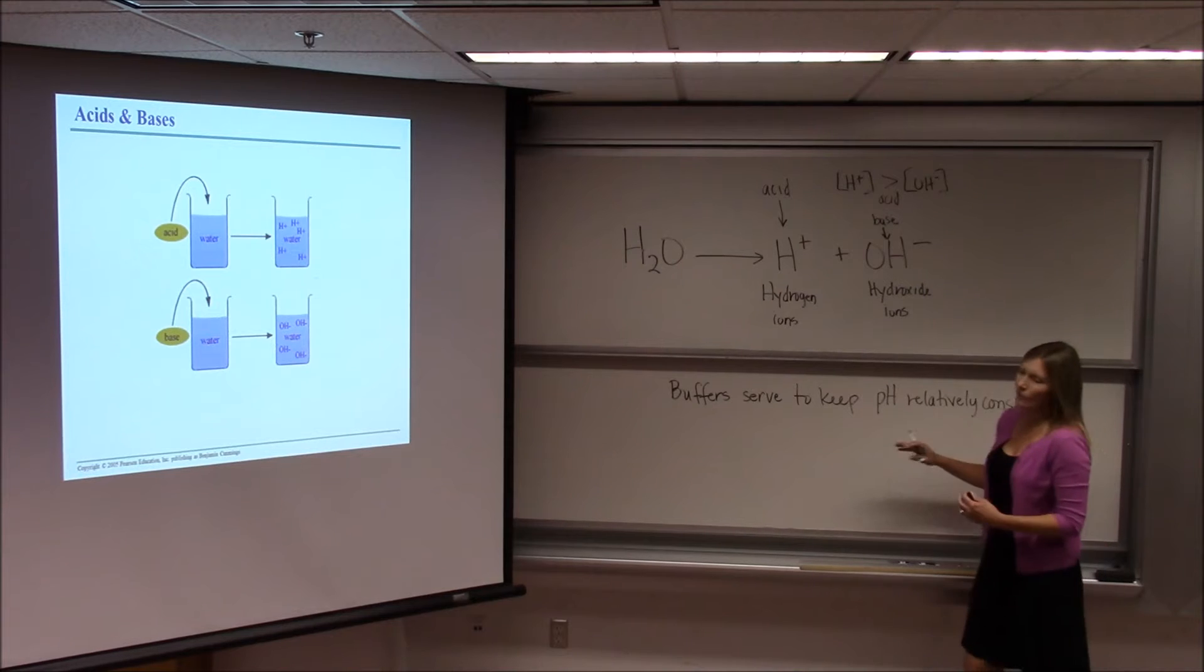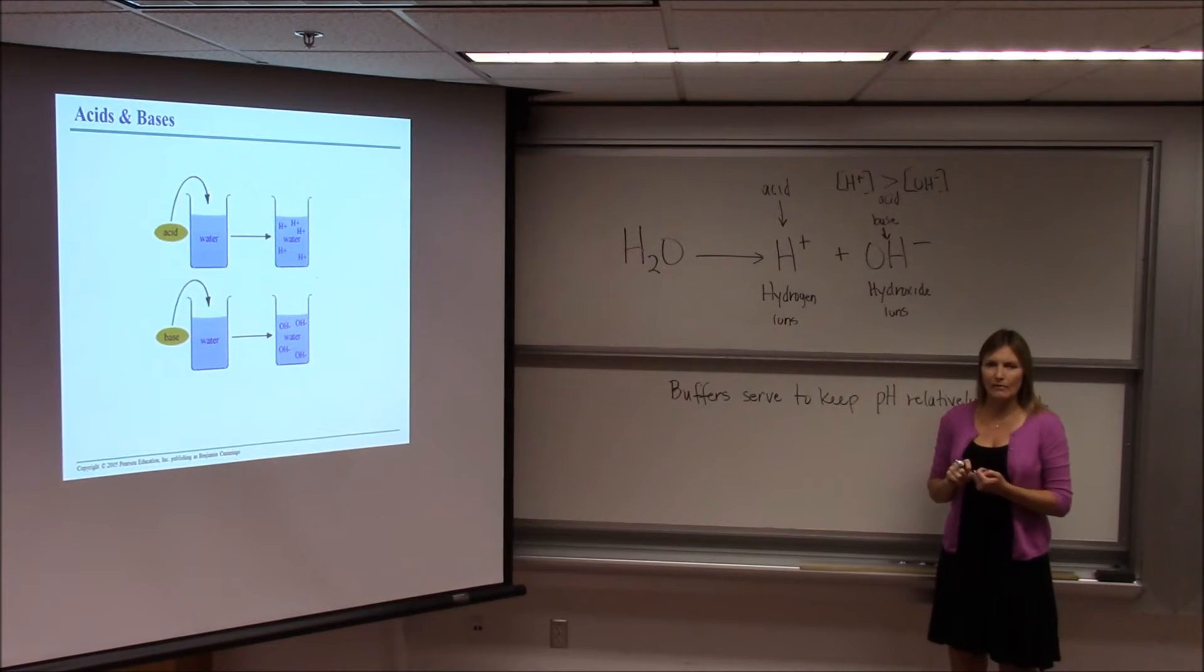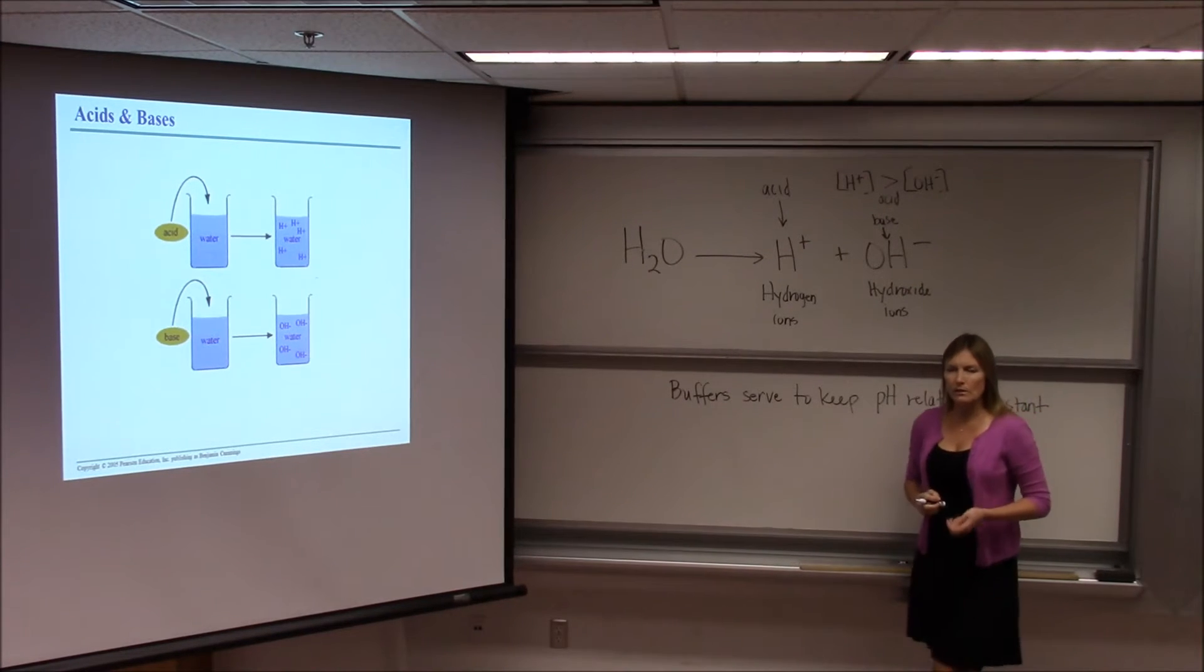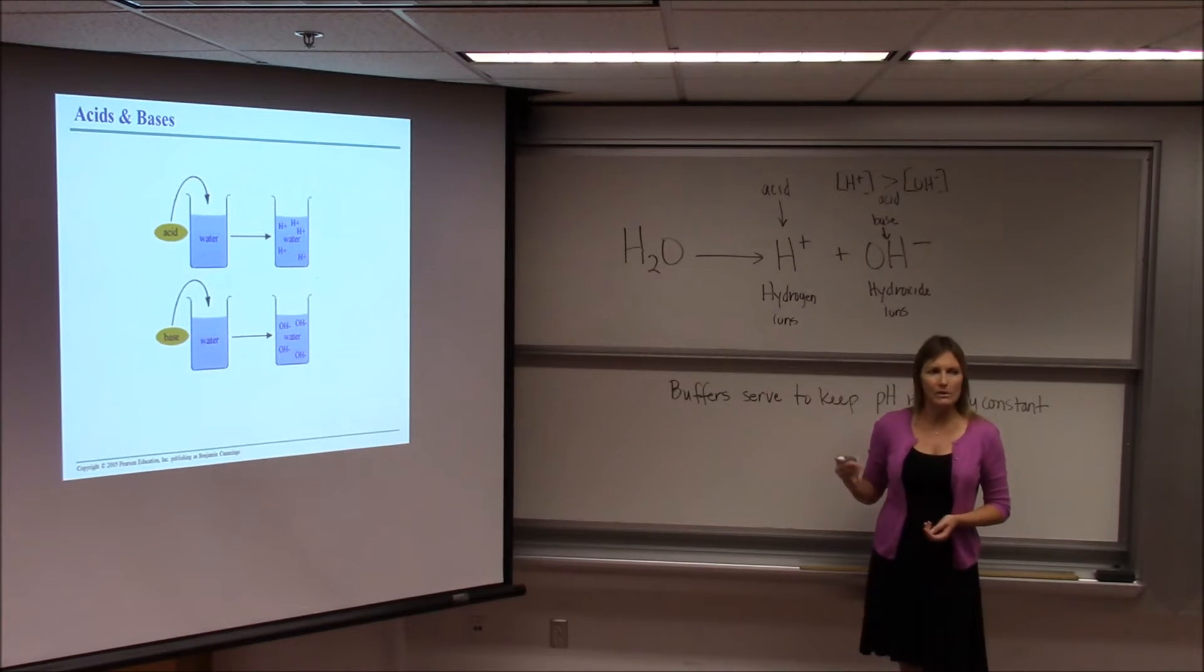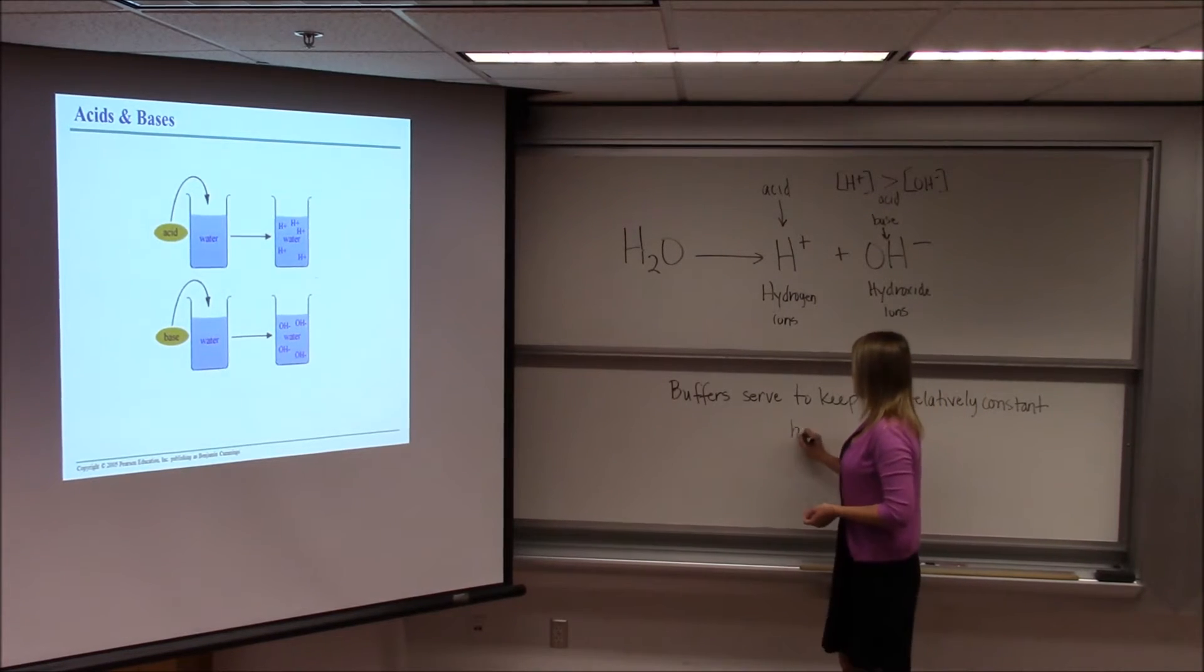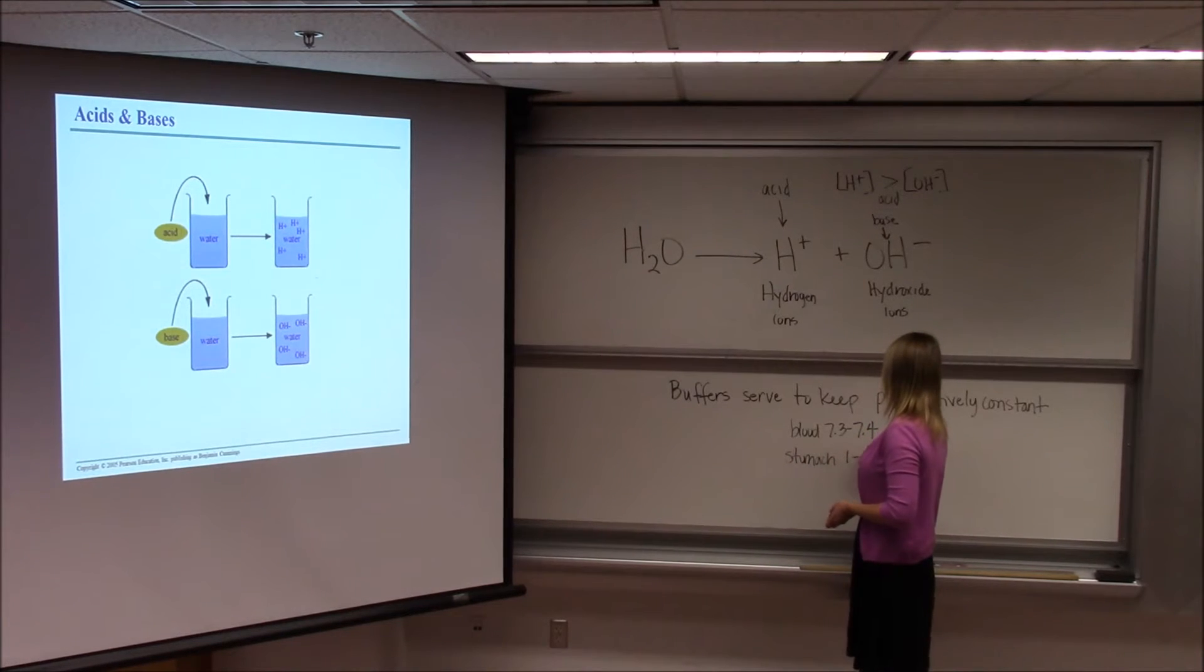They keep it normal for whatever normal is for that environment. So the pH of the stomach obviously is significantly lower than the pH of the blood. The pH of the blood is about 7.3 to 7.4. The pH of the stomach might be pH 1 to 2.